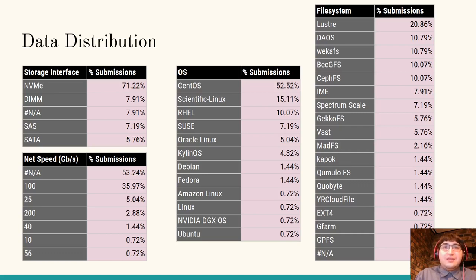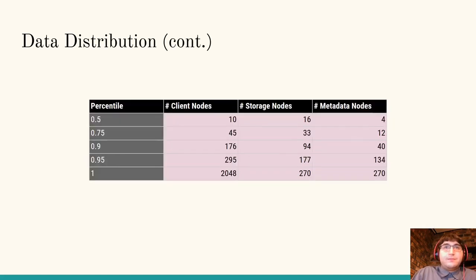Unlike the operating system field, there is no one dominating file system. The vast majority of submissions are of small scale — 75% of submissions have fewer than 45 client nodes and storage nodes. Nearly half of all submissions don't use any metadata nodes, but that's also because of the design of the storage system.